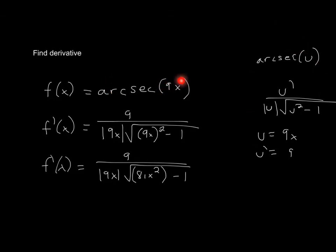All I'm saying is that anything inside the parentheses is going to be denoted as u. So, this is u prime over absolute value of u, square root of u squared minus 1.